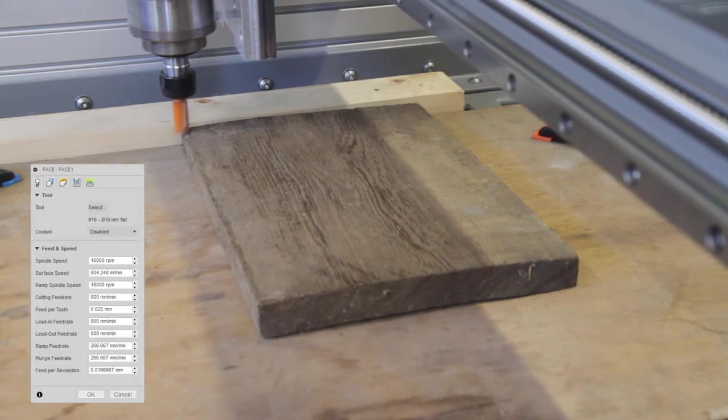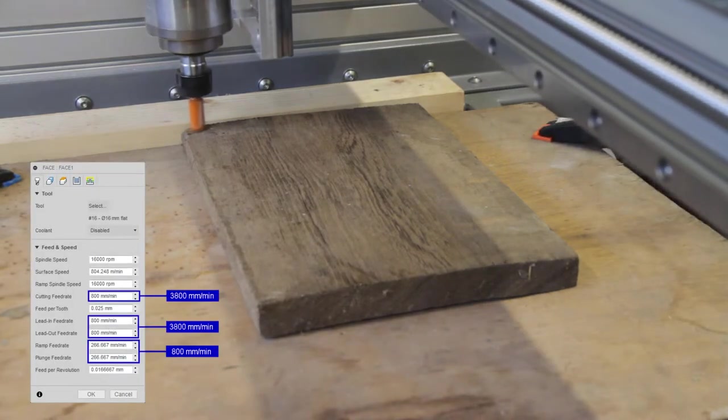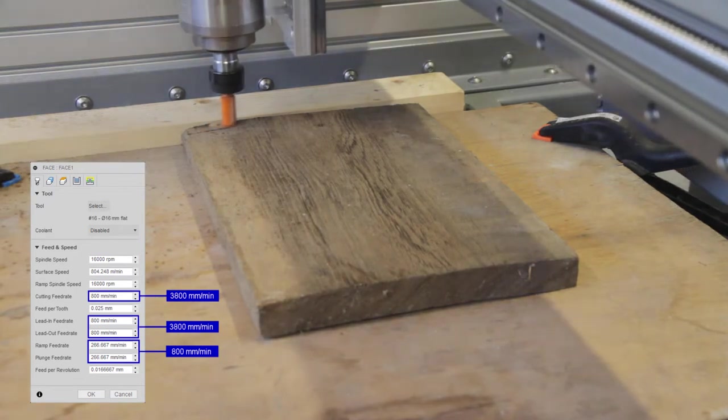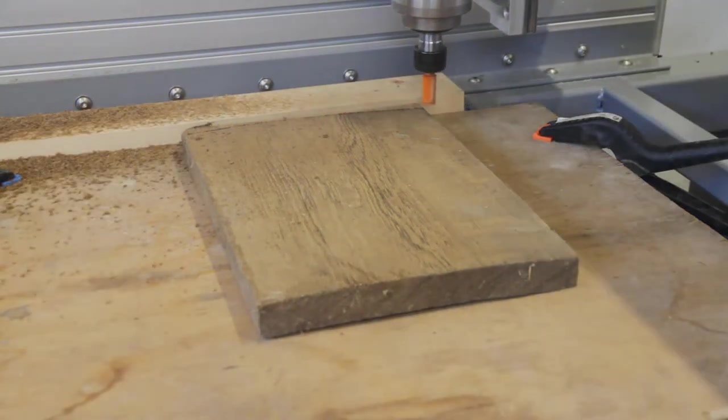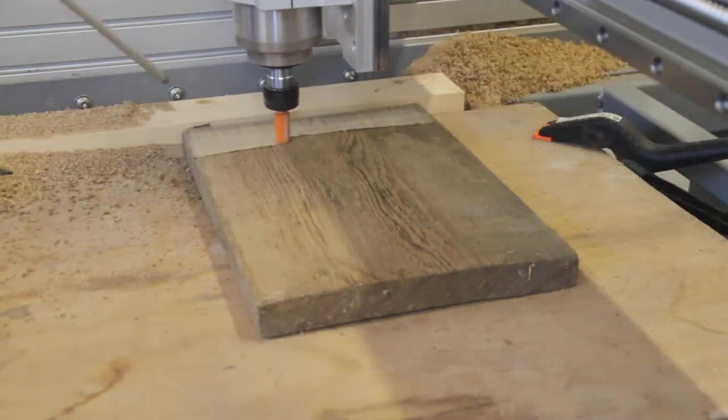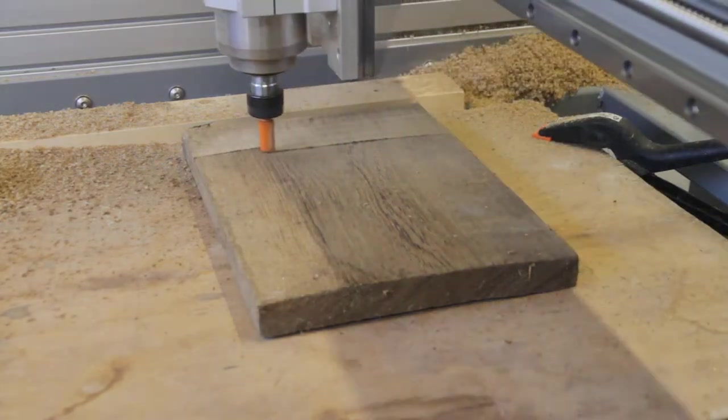Finally time to start cutting. These are the feeds and speeds I use here but I would recommend above 3800 millimeters per minute for the feed speed. This gives a chip of about 0.1 millimeter instead of a lot of dust like I have now.